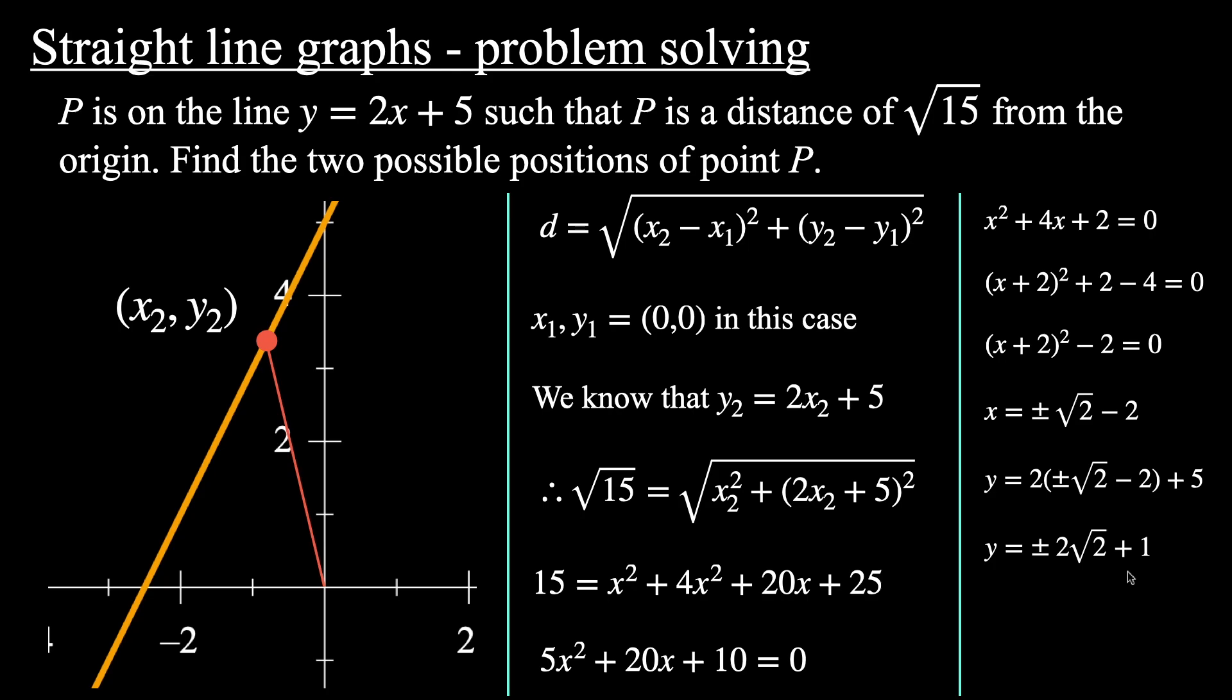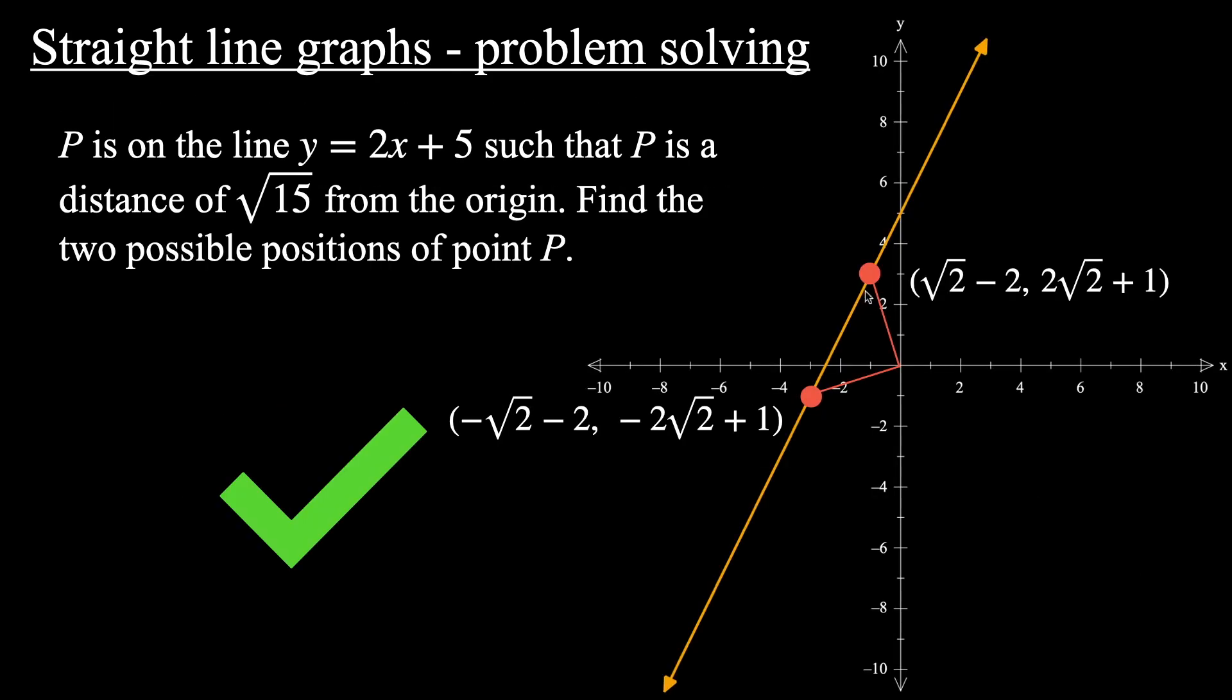So we have our coordinates and let's just see what that would look like. This point here would be (√2 - 2, 2√2 + 1). And this one down here would be (-√2 - 2, -2√2 + 1). And just as we estimated, this is a negative x value, this is a positive y value, and this point down here, they are both negative. So I hope you found those problems interesting. Thanks for watching.